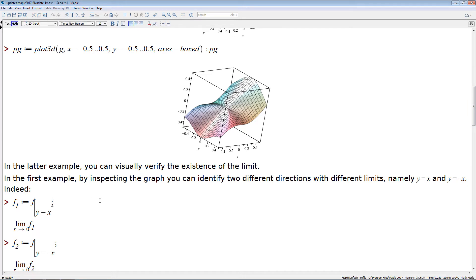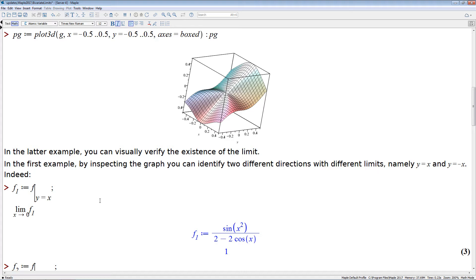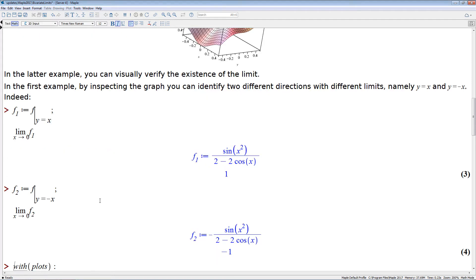So we take the two diagonals. The one is where the y coordinate is equal to x and the other one is where y is equal to the negative. And those are univariate limits and Maple's univariate limit functionality can easily compute those limits. So the limit for y equals x is actually equal to one and the limit for y equals minus x is equal to minus one.